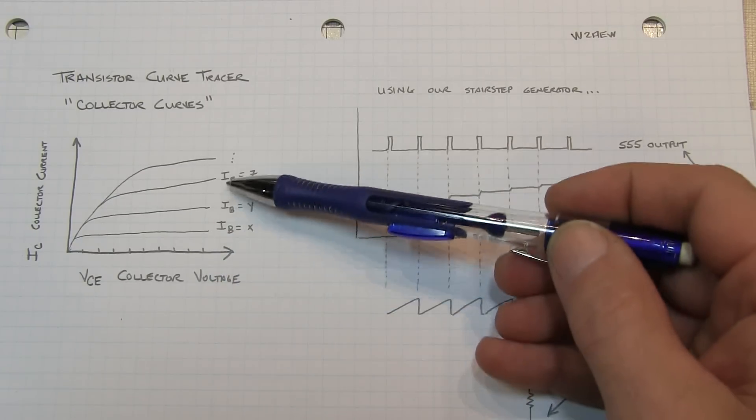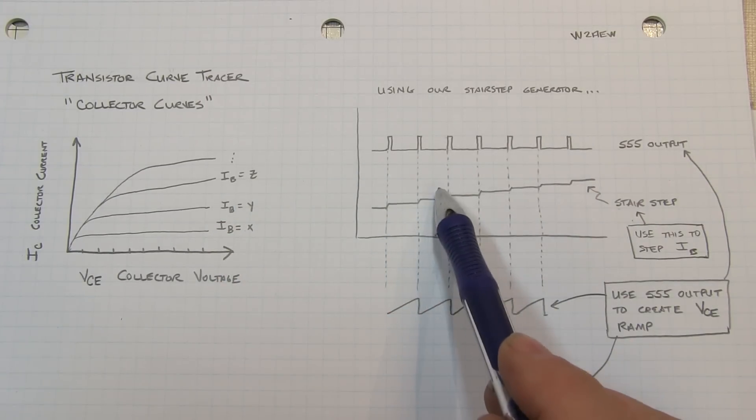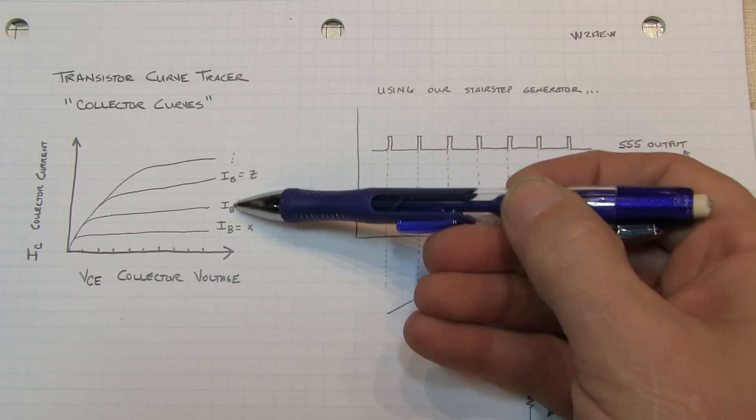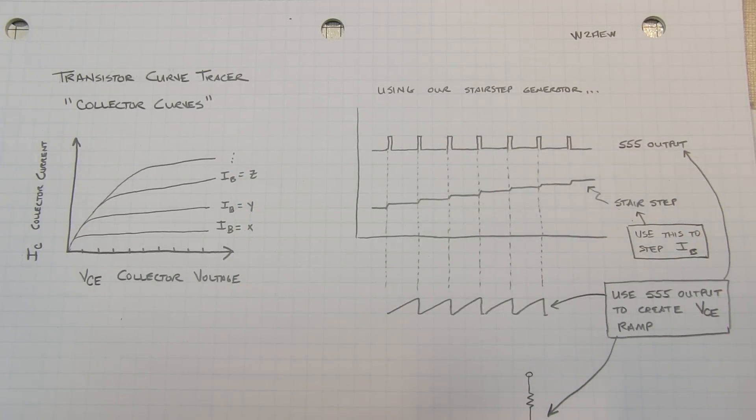In order to do this, we're going to have each step in the stair step represent or create a different base current for the transistor. So that's pretty easy to do.